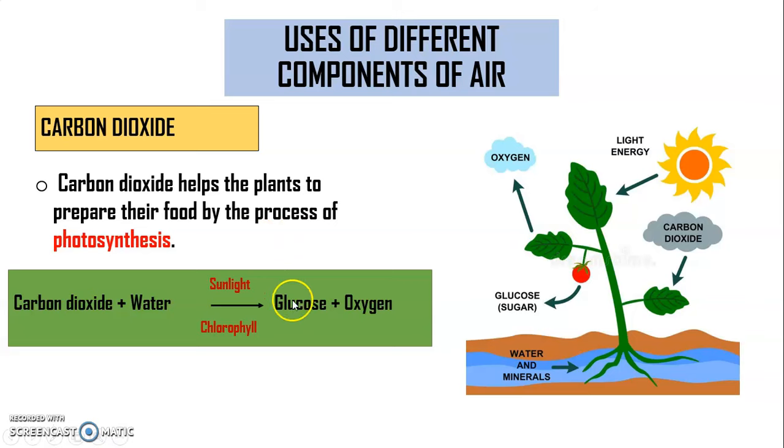So what is the essential thing in case of photosynthesis? We need sunlight and chlorophyll. So in absence of sunlight, photosynthesis cannot take place.